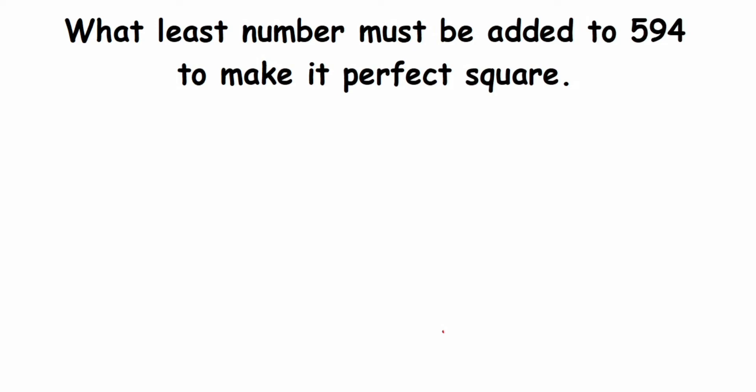Hey everyone, so here is a question on square and square root. The question is: what least number must be added to 594 to make it a perfect square? The number 594 is not a perfect square, so we have to make it a perfect square by adding some number, the least number to be added.